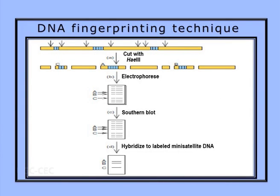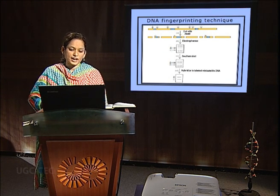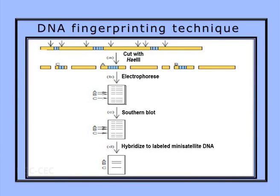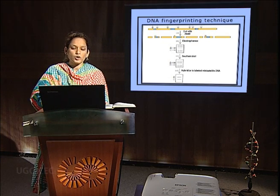The DNA fingerprinting technique is very important and majorly used in forensic science. DNA fingerprinting is based on the fact that eukaryotes contain a large number of repetitive sequences. These repeat sequences vary in length among different individuals, and the number of repeats is characteristic for each individual, so the fingerprint produced helps identify that particular individual. As shown in this diagram, the repeat sequences are cut with restriction enzyme HinfI, then electrophoresis is done, followed by Southern blotting, hybridization to labeled mini-satellite DNA, and autoradiography.